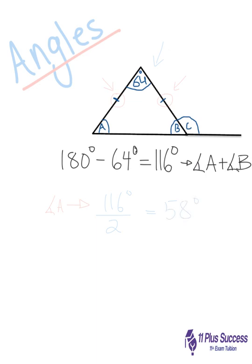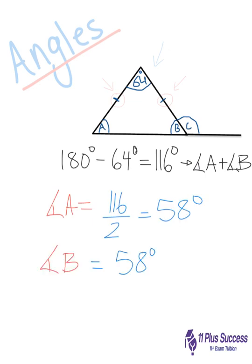Now, this 58 degrees is not only the value of angle A, but it's also the value of angle B. You can even draw in your diagram, so we know that angle A and angle B both have a value of 58 degrees.